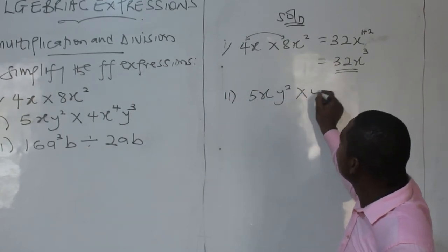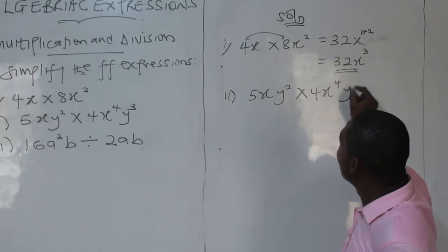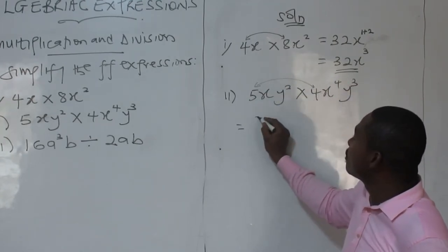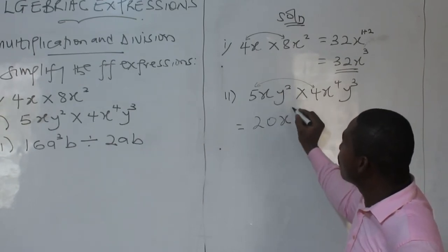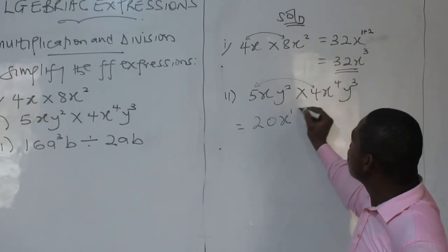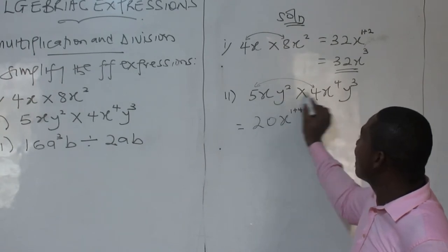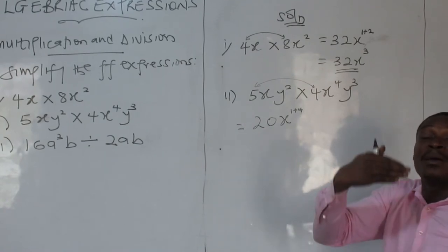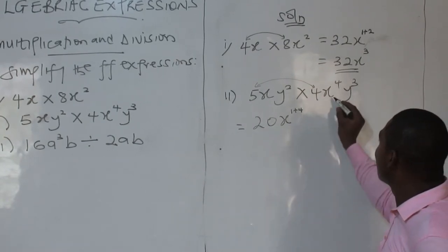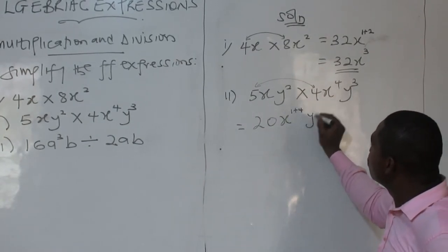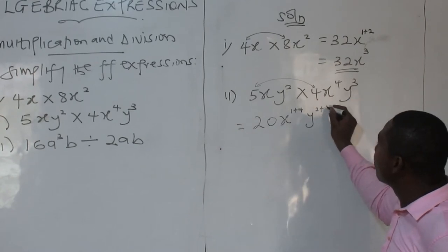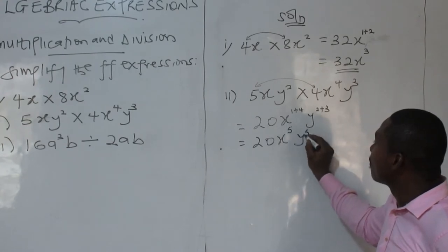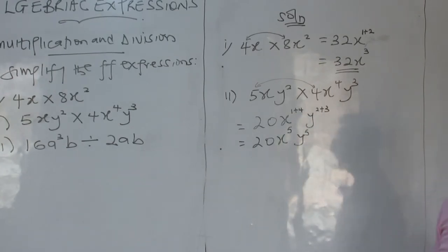Let's try the next one again. 5xy squared times 4x times 4y cubed. Now, 5 times 4 will give me 20. This is x to the power exponent 1. This is also x. So indices say add the powers when you are multiplying and the bases, the carrier of the powers, are the same. They are the bases. This is y 2. That is another y. So I have 20x to the 5, y to the 5. That is how it goes.